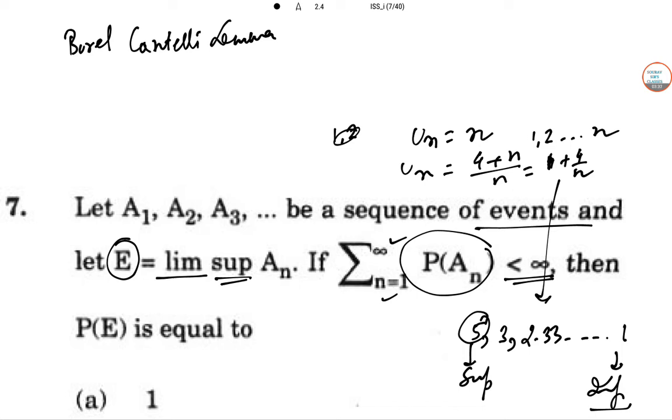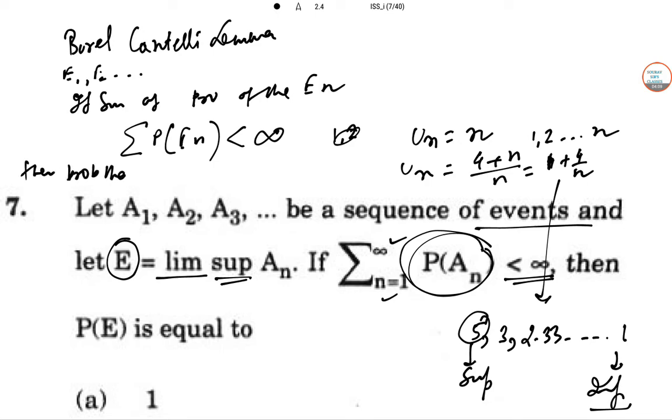So in probability theory, this lemma is a theorem about a sequence. The statement says: let E₁, E₂, etc. be a sequence of events in some probability space. Then if the sum of the probabilities of the events Eₙ is finite—that is, summation of P(Eₙ) is less than infinity, which is exactly the case for Aₙ here—then the probability that infinitely many of them occur is 0.